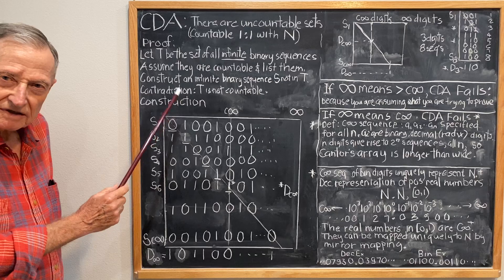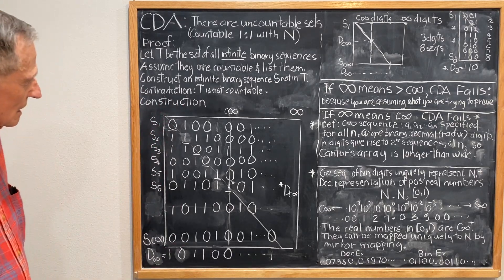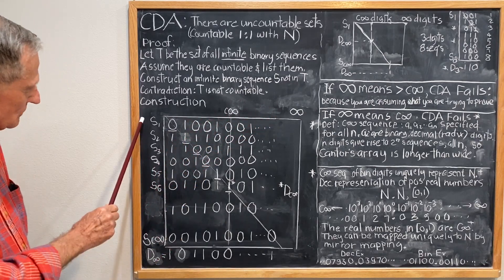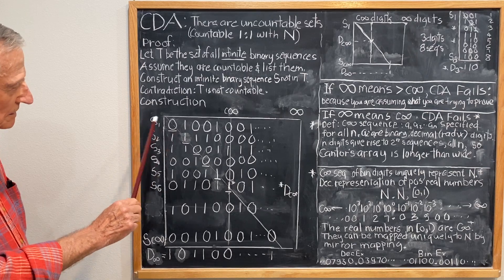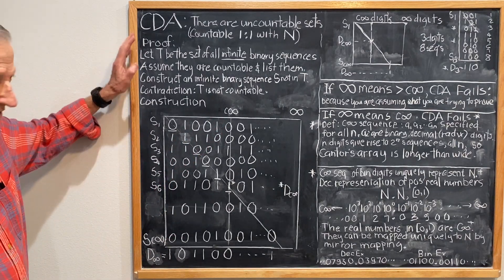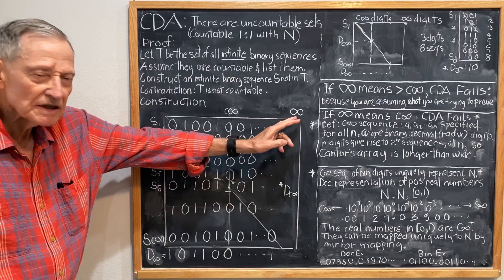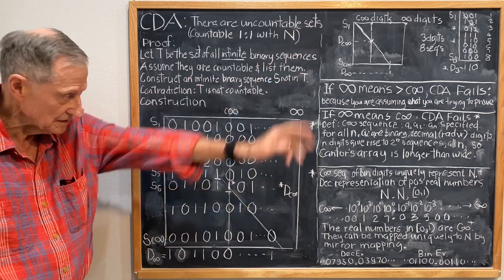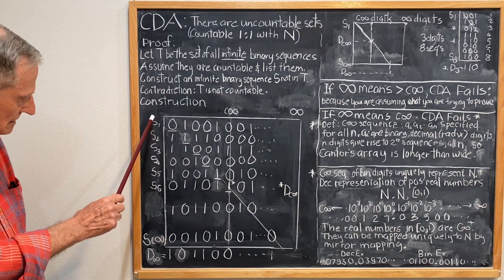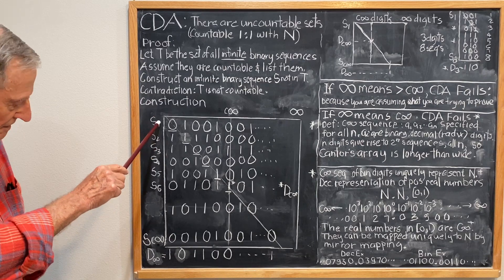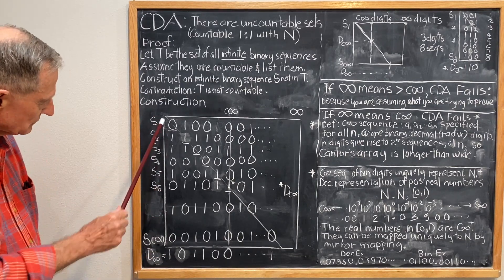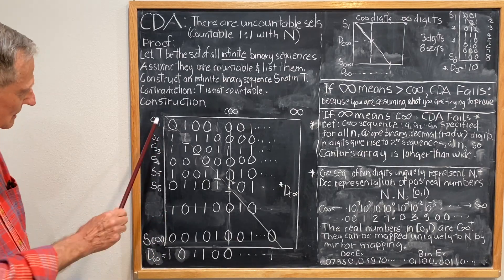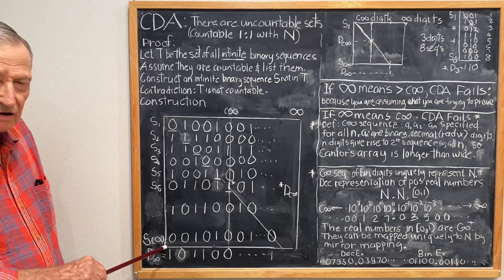Now, the construction. Cantor's construction is as follows. Up here we have digits in the sequence, and here we have the sequence. According to Cantor's Diagonal Argument, there are an infinite number of digits in the sequence — in other words, it goes on infinitely, whatever that means. Then, assuming the sequences are listable, we list them as one down to countably infinite. In other words, we have a countably infinite number of sequences.